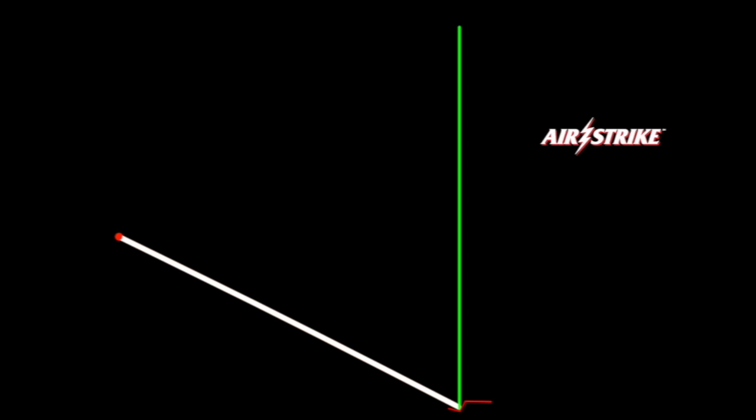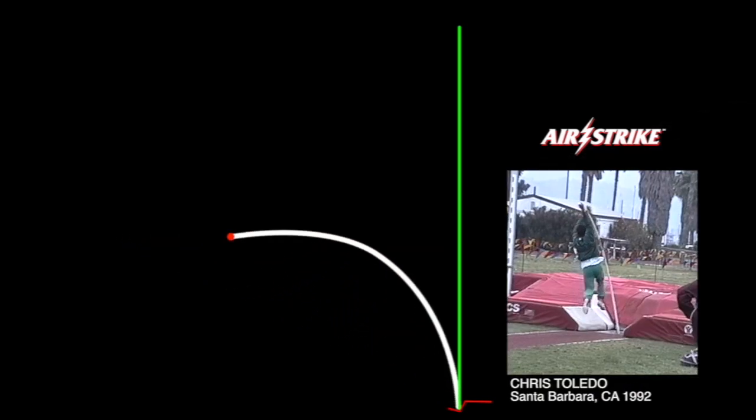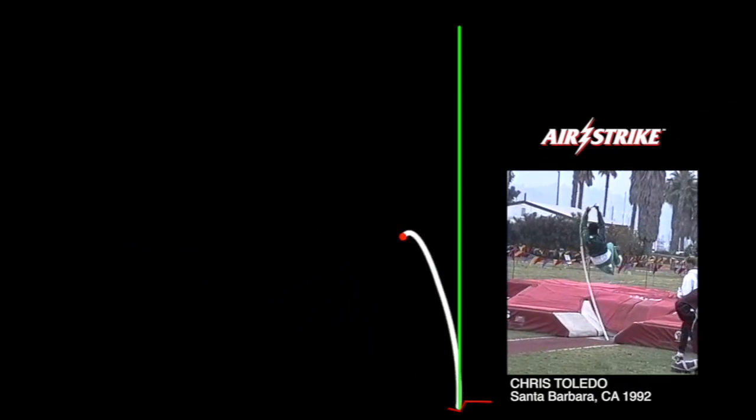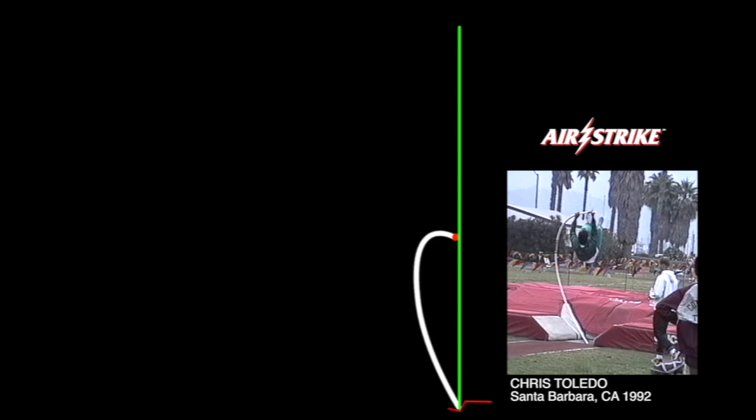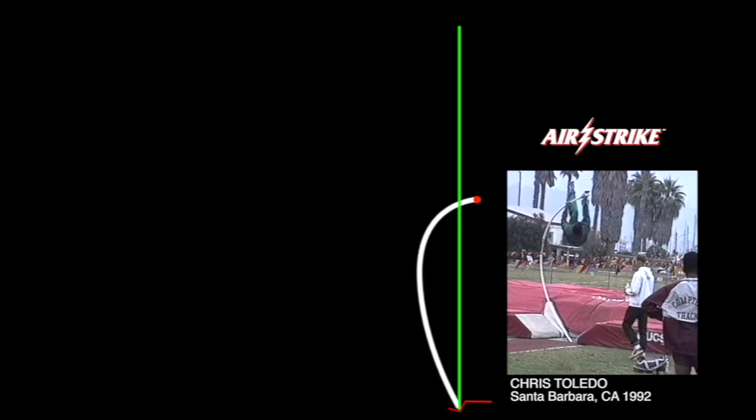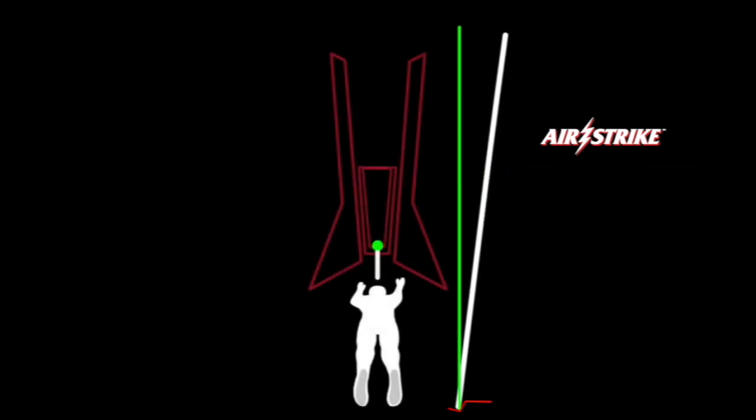This facsimile shows how the top end of the Airstrike vaulting pole is rotated into its proper fully loaded position, from which the vaulter controls the recoil energy in the pole, producing a powerful skyward launch safely over the landing mats.